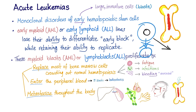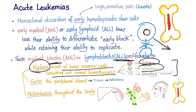These blasts, whether myeloid or lymphoid, will do three things. First, they replace most of the bone marrow, crowding out normal hematopoiesis. You end up with pancytopenia leading to fatigue, infections, and bleeding — mucosal bleeding because this is a platelet problem, not a coagulation factor problem. If it were a coagulation factor problem, the bleeding would be deep, such as hemarthrosis.